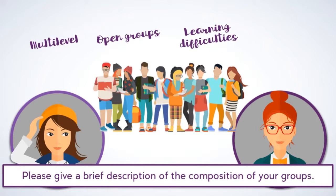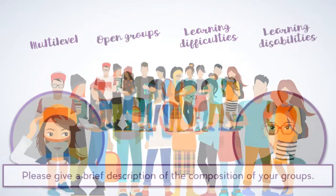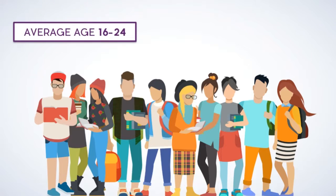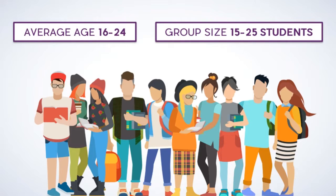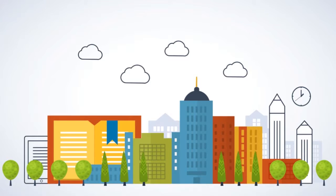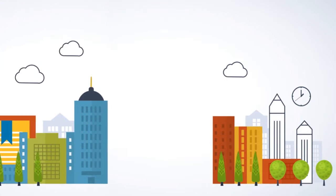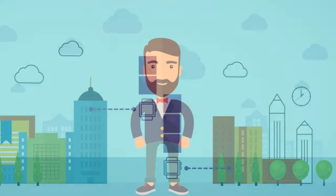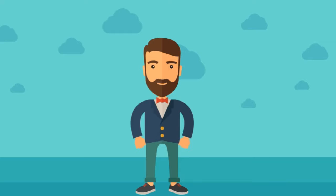Many of my students either have learning difficulties or learning disabilities. How old are your students, and how many do you have per group on average? They're between 16 to 24 years old, sometimes a bit older, and depending on the time of the year my groups vary between 15 to 25 students. How long are your learning blocks? I teach in two different centers — one has two-hour blocks and the other has three-hour blocks.